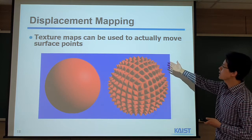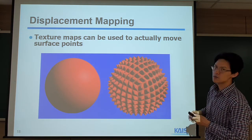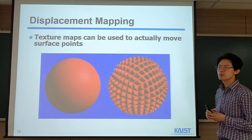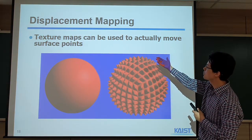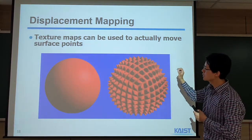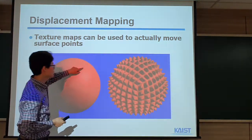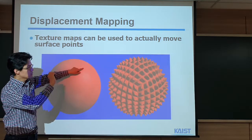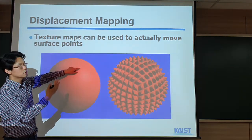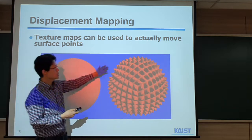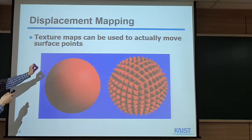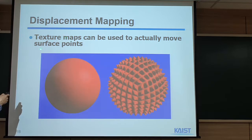Another one is displacement mapping. Here we use texture mapping to directly adjust the surface point. Some recent GPUs can support displacement mapping. So far we didn't change the geometry — we just changed the normal. But here, we directly change the geometry. When rasterizing, we change the x, y, z information of the vertex coordinates based on some texture mapping, and we actually change the geometry. We call that displacement mapping — we displace the actual x, y, z coordinates of each vertex, each surface point.